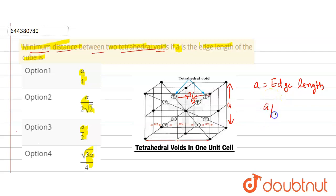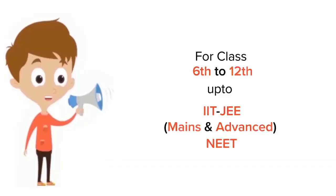a by 2. So here, option 3 is correct. That's our solution for this question. Thank you.